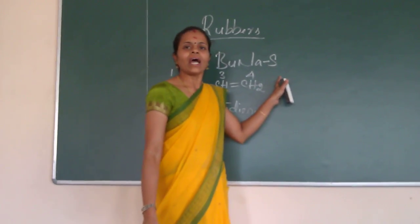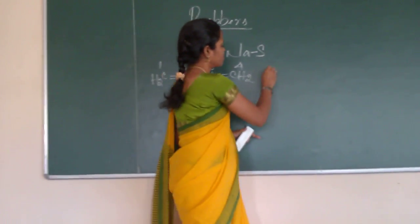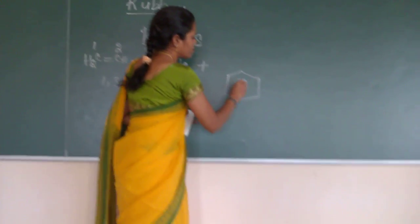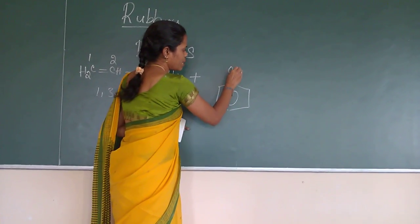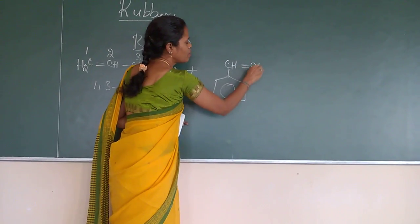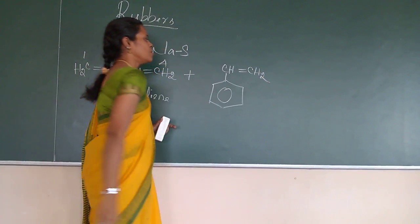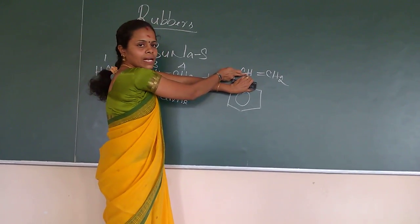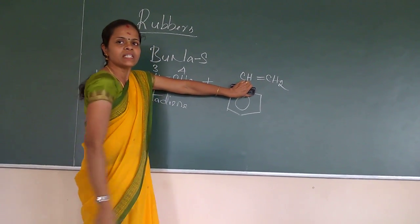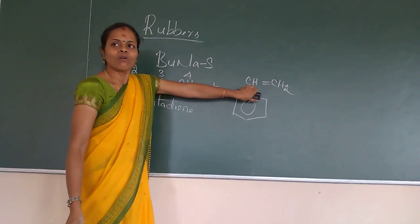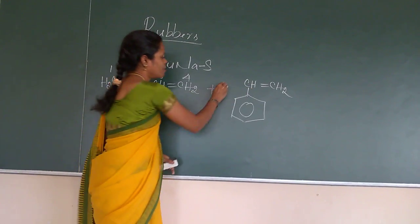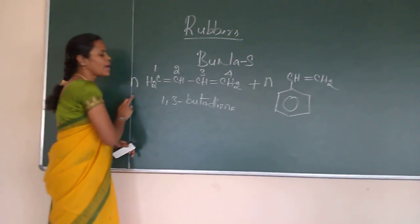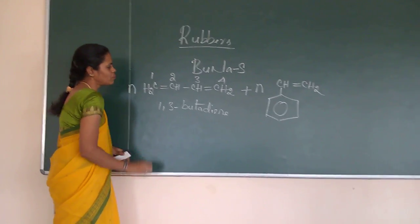When we are going to add a styrene with it, styrene is nothing but C6H5, CH double bond CH2. So in the ethylene molecule, if you can replace one hydrogen by means of benzene ring, means that we can call it as a styrene. So here I am taking the n number of styrene and here also I am taking the n number of 1,3 butadiene.